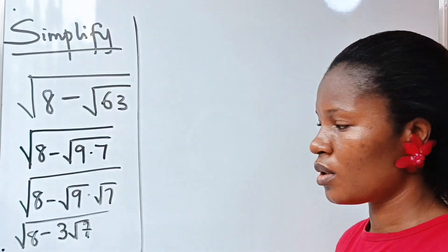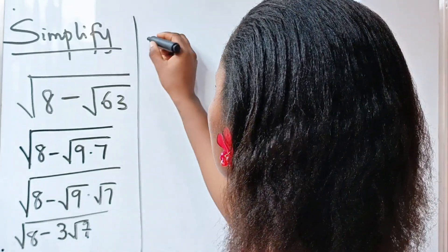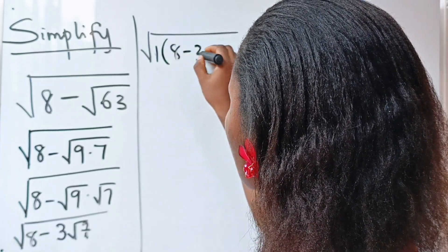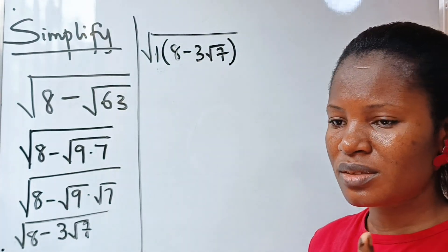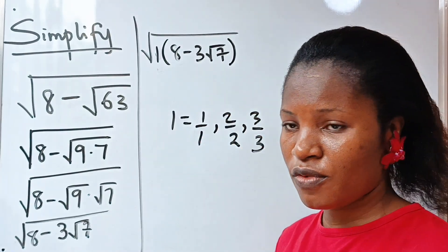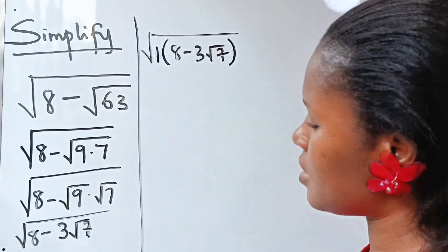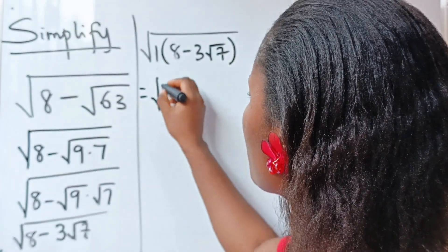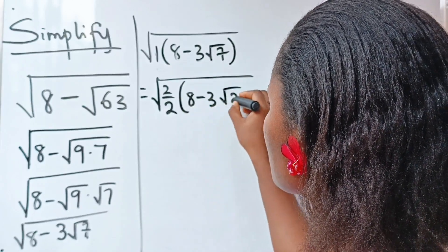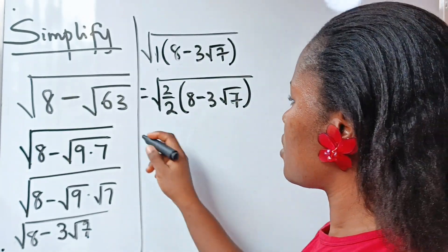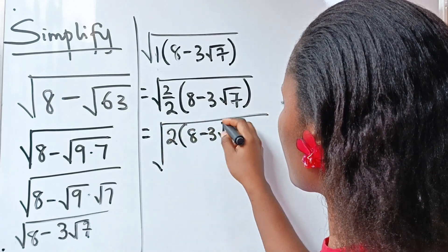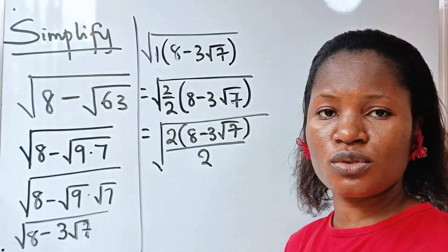Now, note that we can still write this as square root of 1 multiplied by 8 minus 3 root 7. Note that 1 can be anything — it can be 1 over 1, 2 over 2, 3 over 3, and so on. Therefore, I can write this as the square root of 2 divided by 2, multiplied by 8 minus 3 root 7. I have not changed anything, right?